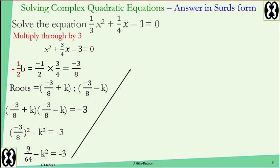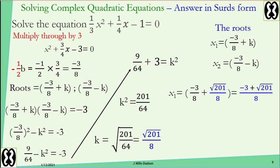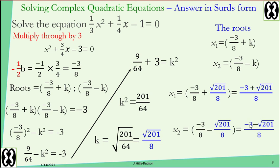Add 3 to both sides and add k squared to both sides. Work out 9 over 64 plus 3, then find the square root on both sides. k equals root 201 over 8, since root 64 is 8. Replace k with root 201 over 8 in the root expressions. The first root is negative 3 over 8 plus root 201 over 8, which simplifies to negative 3 plus root 201 all over 8. The second root simplifies to negative 3 minus root 201 all over 8. Done.